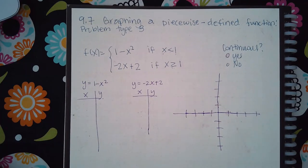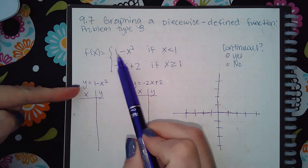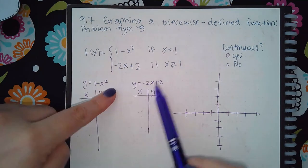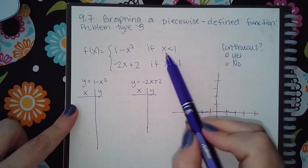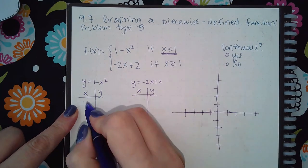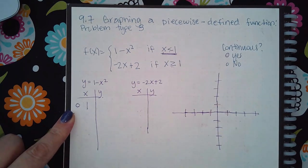Here we have 9.7 graphing a piecewise defined function, problem type 3. We're going to apply the same strategy as before: use y equal to one expression for one table, and y equal to the other expression for the other table. The values in the table are defined by the conditions on the side, so x less than 1 means 1 is an endpoint, but since there's no equal bar it'll be an open circle.